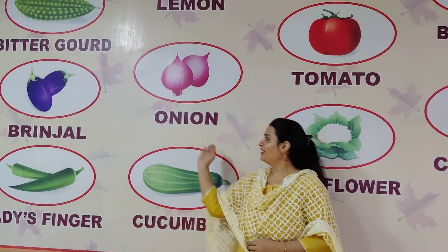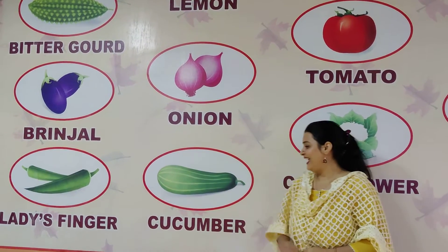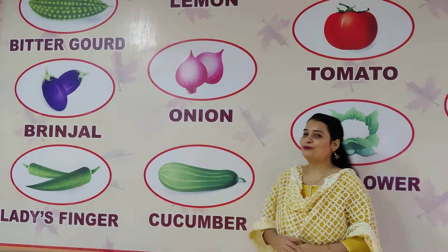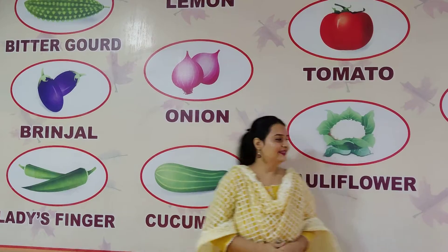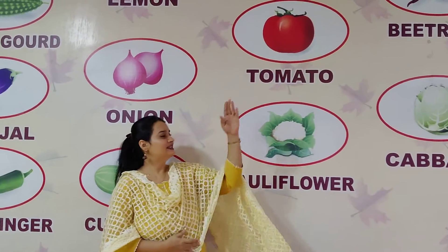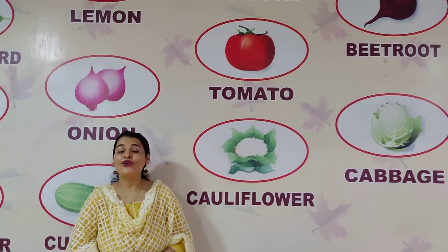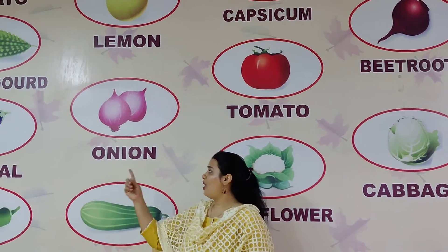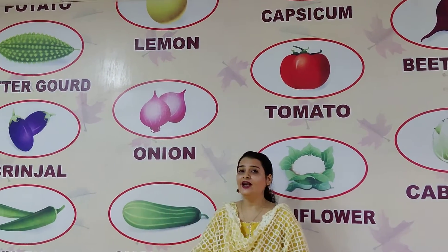So my dear students, what can we see here? Yes, vegetables. Yes, cucumber, onions, then here cauliflower, then tomato. Yes, so we all can see here some vegetables.